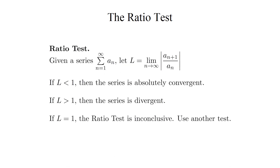Given a series sigma sum of a sub n, take the limit of the absolute value of the ratio a sub n+1 over a sub n. If the limit you get is strictly less than 1, then the series is guaranteed to be absolutely convergent. If the limit is strictly greater than 1, then the series is definitely divergent. But if the limit is exactly equal to 1, or does not exist, the ratio test is inconclusive, and you'll need to use a different test.